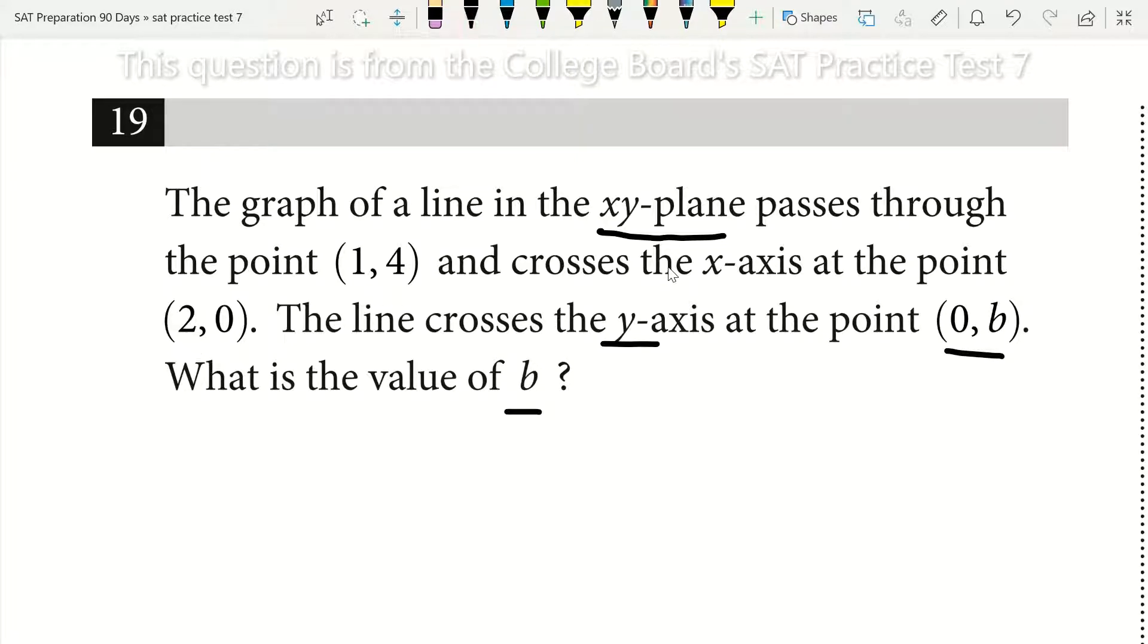What a lot of people will do here is they'll use these two pairs of points, this point (1, 4) and this point (2, 0), and they'll use that to create their equation y equals mx plus b, and then they'll plug in 0. And that will get you to the correct answer as far as solving for b when you plug in 0 for x in your equation.